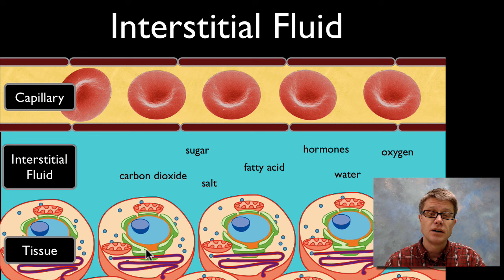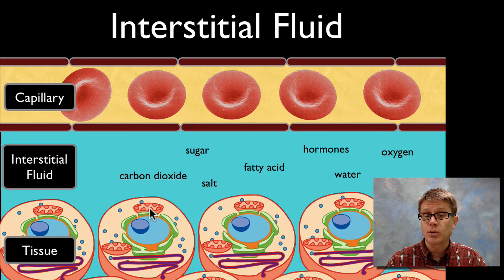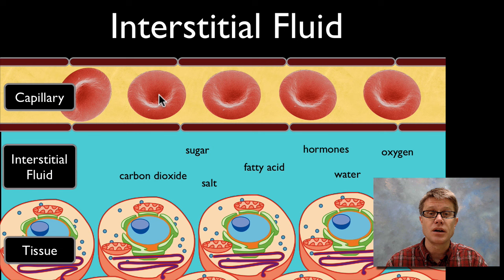What gas do cells consume? They consume oxygen. It's consumed in the mitochondria, but it diffuses from the red blood cells through the plasma, through the interstitial fluid, and eventually into the cell. What about carbon dioxide? It builds up inside the mitochondria, diffuses out, diffuses through the interstitial fluid, and is carried as bicarbonate on the red blood cells.